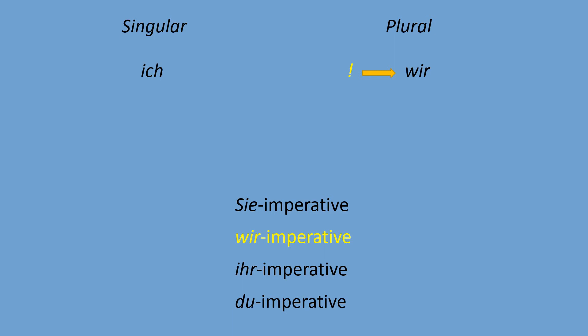The second person singular is 'du.' Of course we can give commands to one friend — 'hey, come to me' or 'give me your book.' Those commands are absolutely possible, so we can use the du-form. We call it the du-imperative.